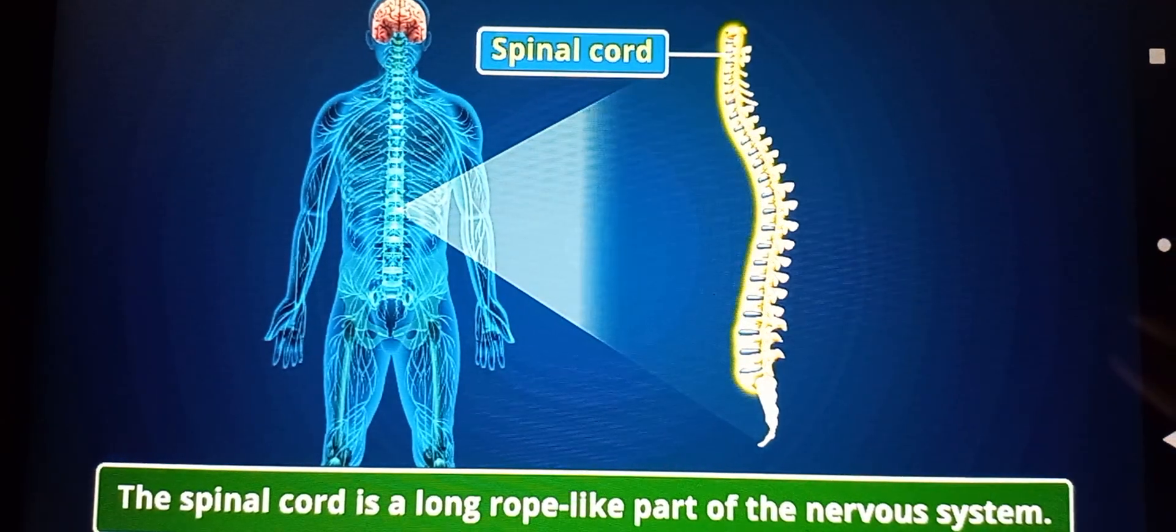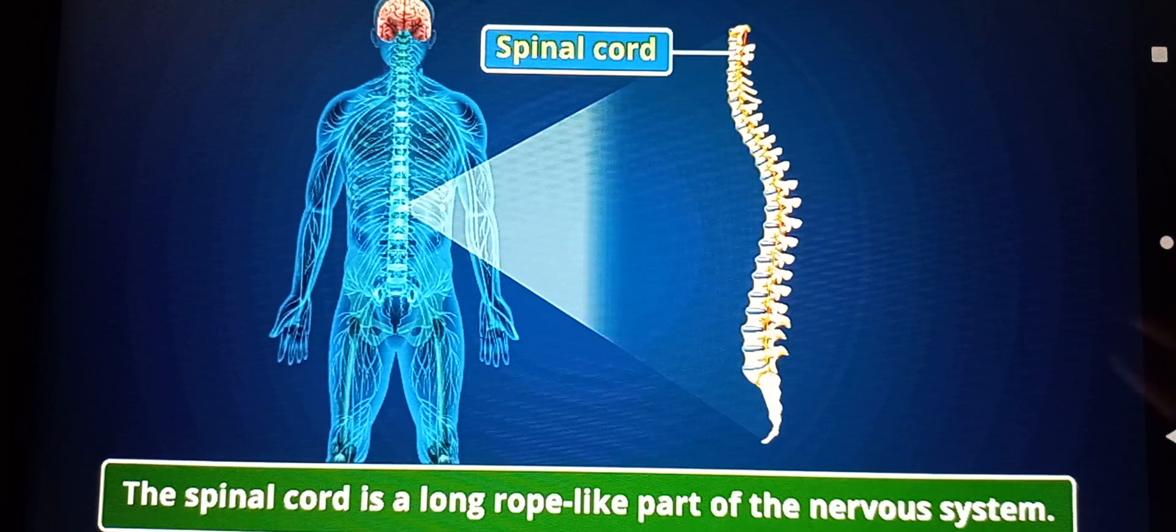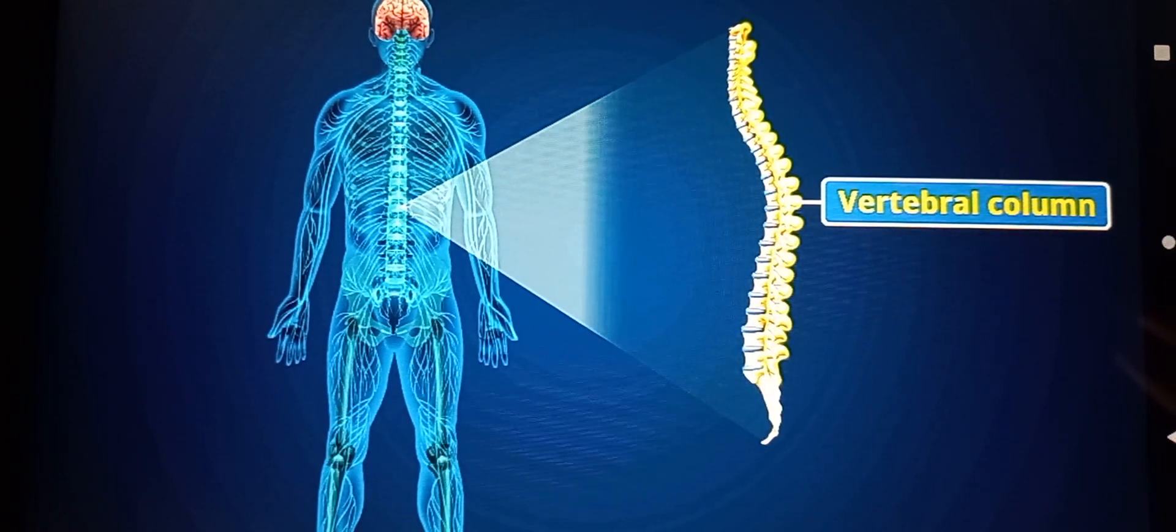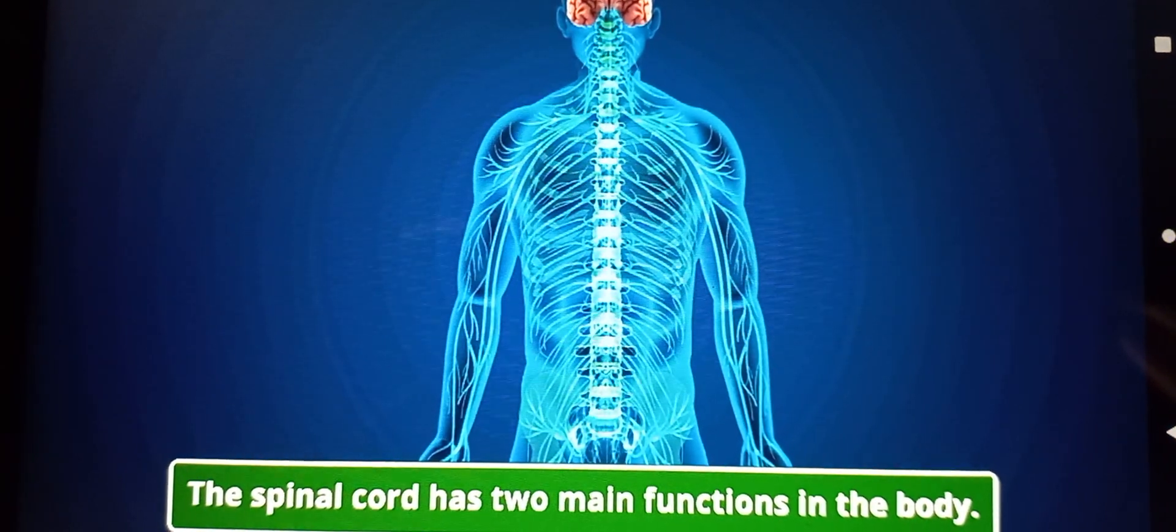The spinal cord is a long, rope-like part of the nervous system. It is protected by the vertebral column. The spinal cord has two main functions in the body.